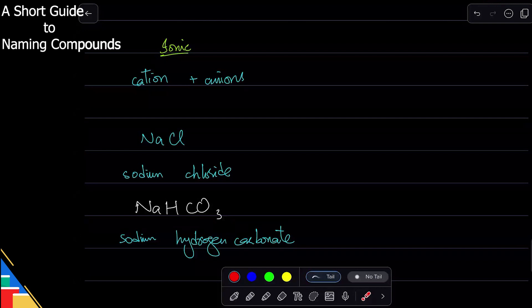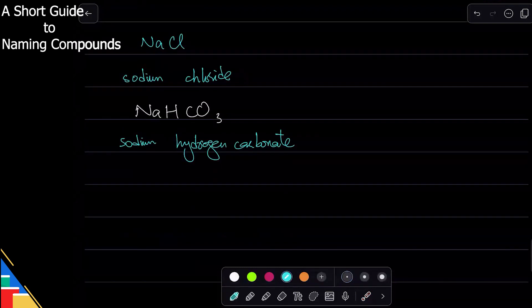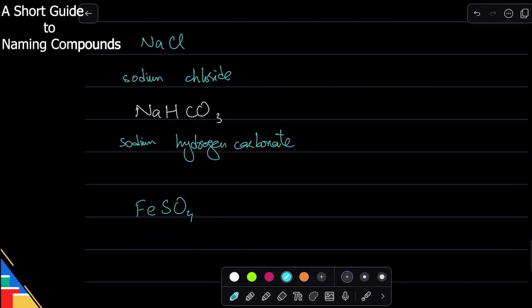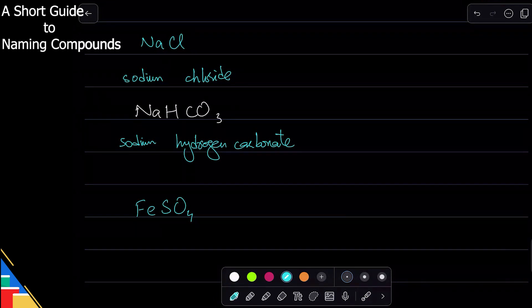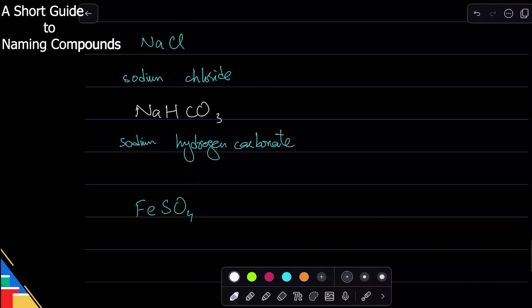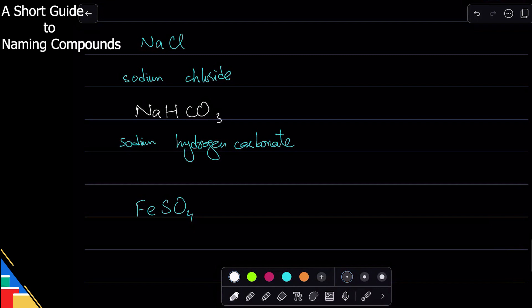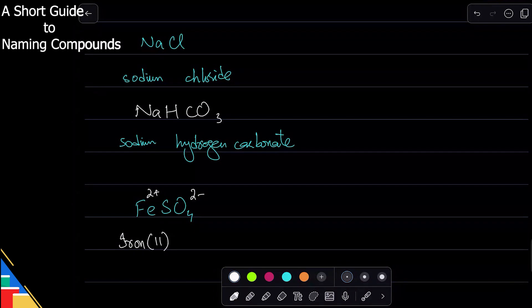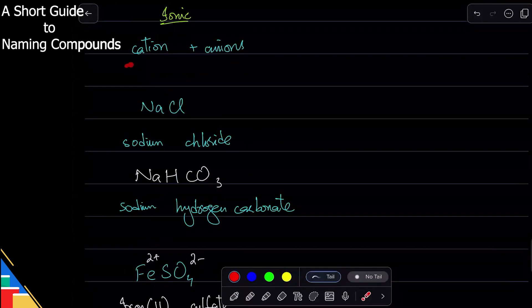There are names that have numbers in them. For transition metal compounds - transition metals have variable valency, their charge can change. It's important we know which oxidation state or charge we're talking about. For example, with FeSO4, sulfate is -2, so to cancel it out iron should be +2. That gives us the name iron(II) sulfate - this is the cation name.